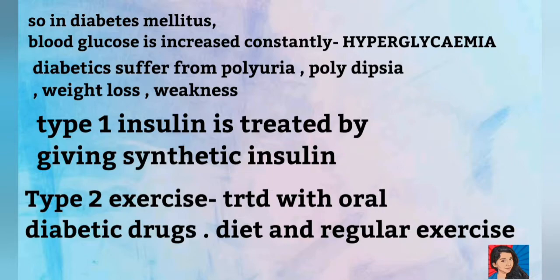Symptoms include polyuria — frequent urination — polydipsia — frequent thirst — weight loss, and weakness. If you have any of these symptoms of diabetes, you should seek medical attention. Type 1 diabetes is insulin deficient.